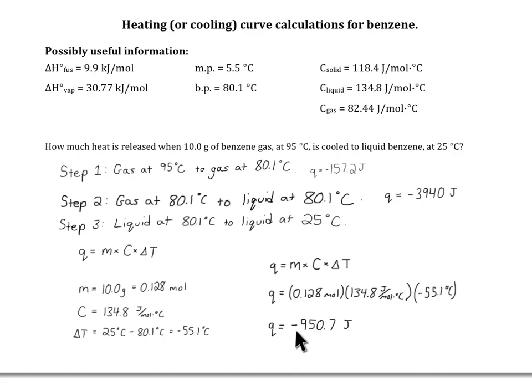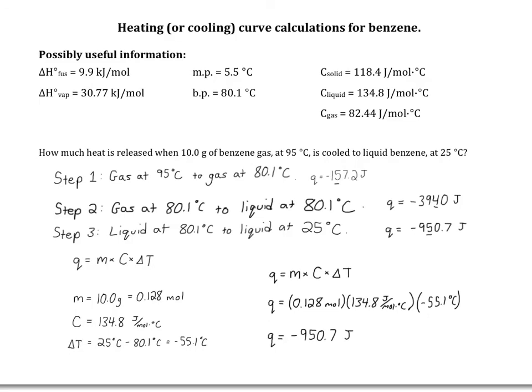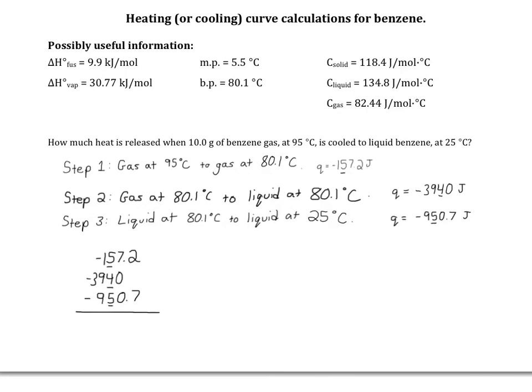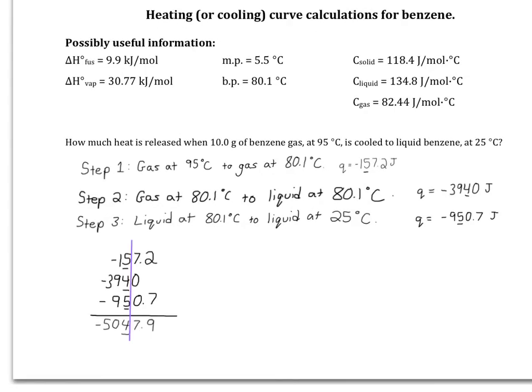Once again, we have a negative sign for an exothermic process. The last thing to do is to add up the heat released at each step. Don't forget your addition and subtraction rule. Altogether, the three steps released negative 5050 joules of heat. Hope this video was helpful in showing you how to do heating curve calculations.